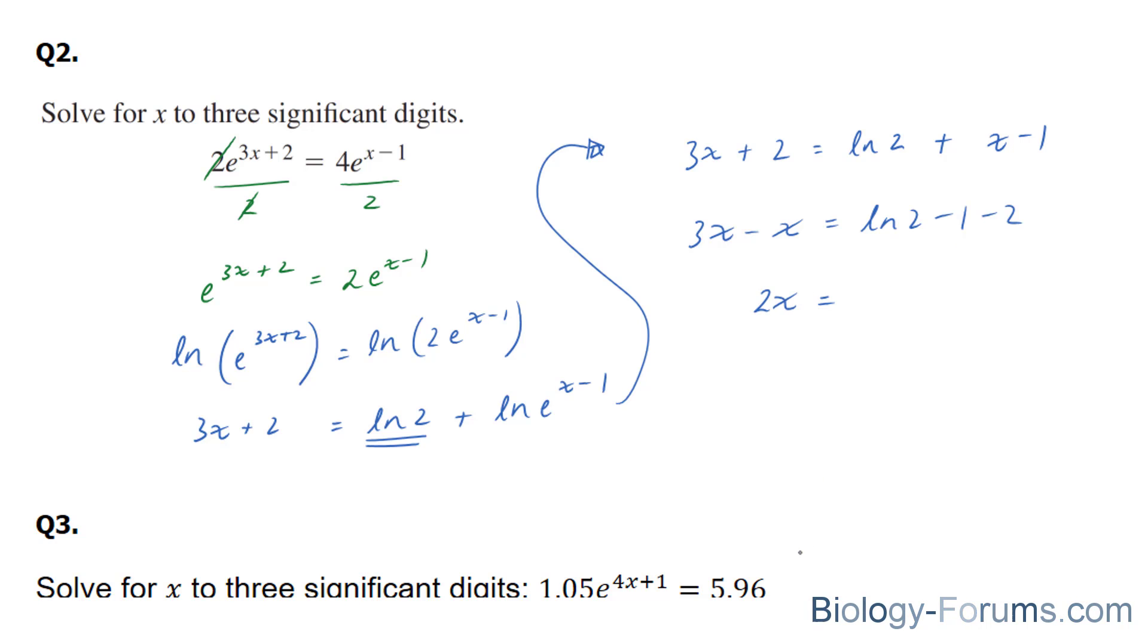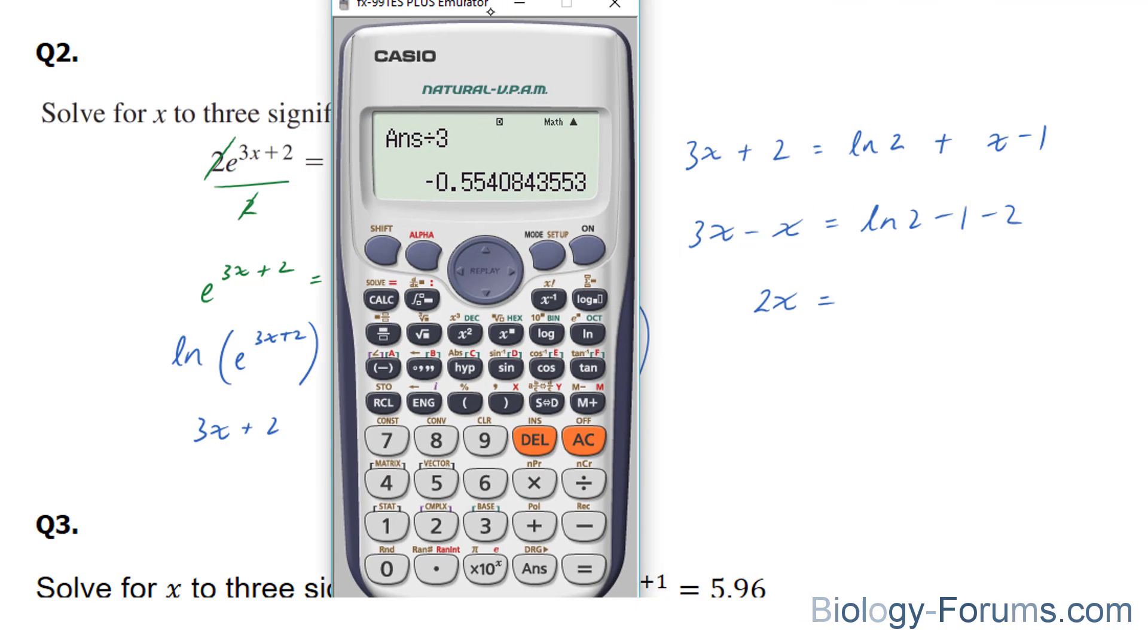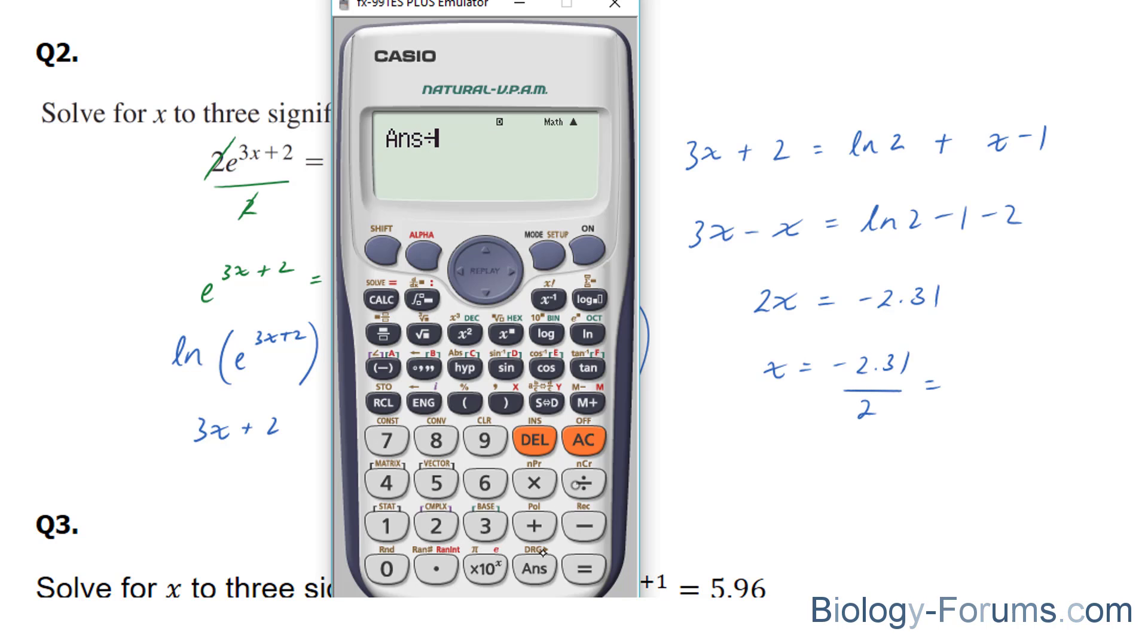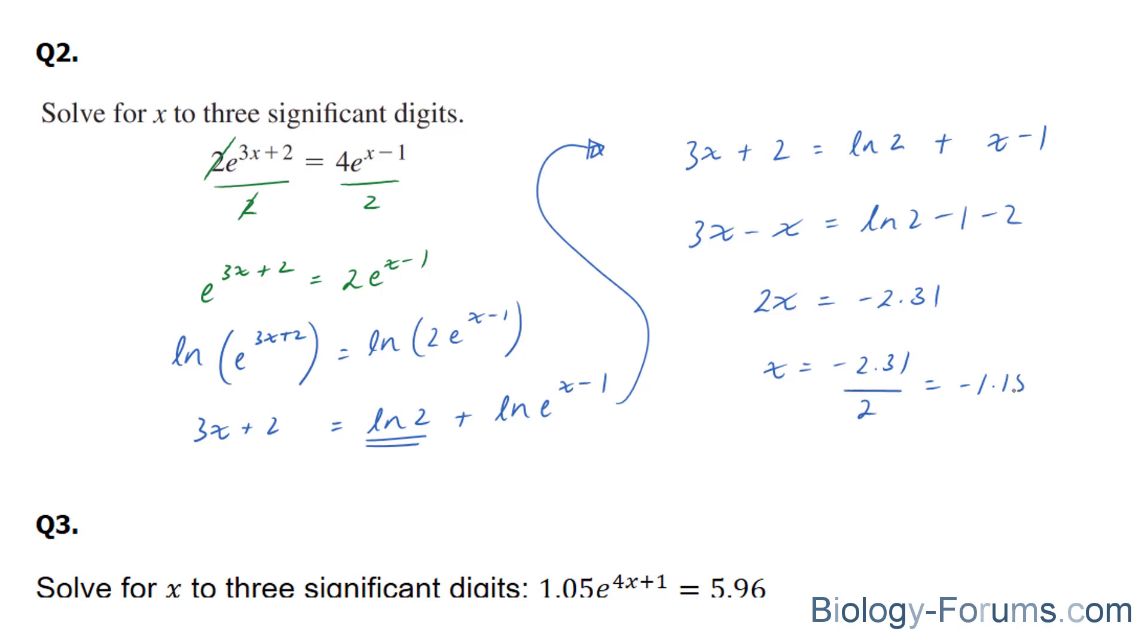And on the right side, we end up with, let's use our calculator, ln of 2 minus 1 minus 2. I'll just write this down: negative 2.31 approximately. And x is equal to that value divided by 2, is equal to negative 1.15. So there you have it, x is equal to negative 1.15.